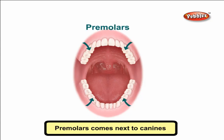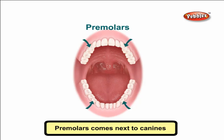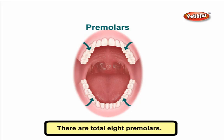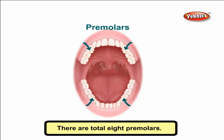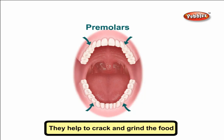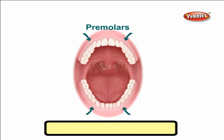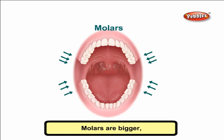Premolars come next to the canines. They are broad and flat. There are a total of eight premolars. They help to crack and grind the food into fine pieces.